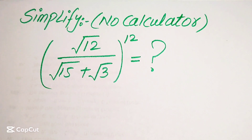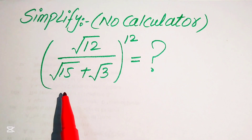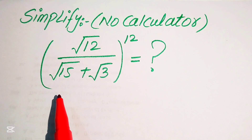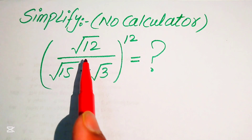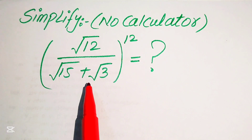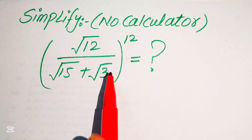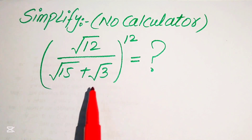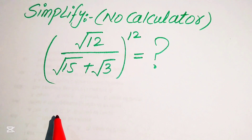Hello everyone. How to simplify this nice algebraic expression without using a calculator — we will show all of the working on paper. We have the square root of 12 divided by the quantity square root of 15 plus square root of 3, and its whole power is 12. We will simplify this algebraic expression.